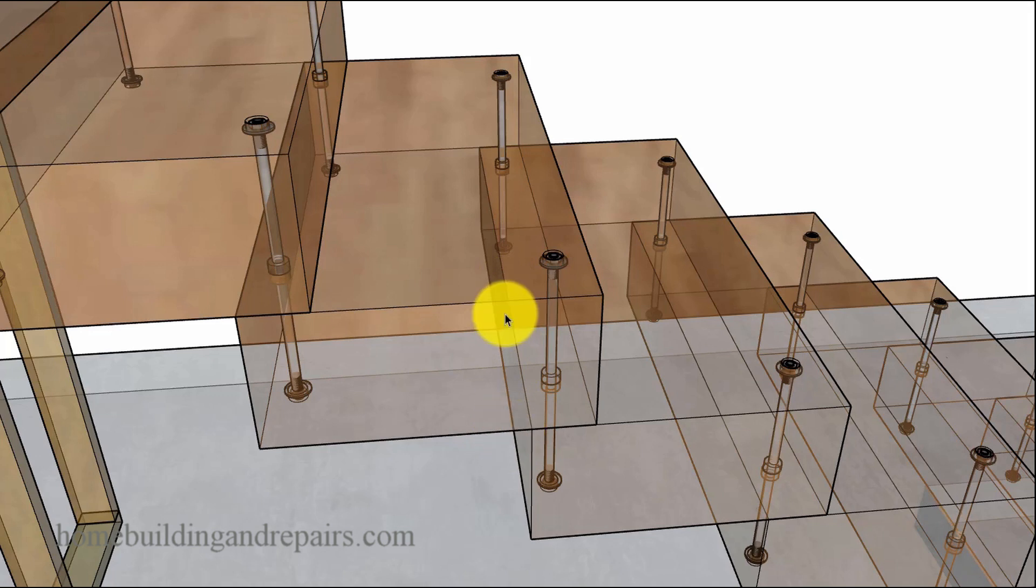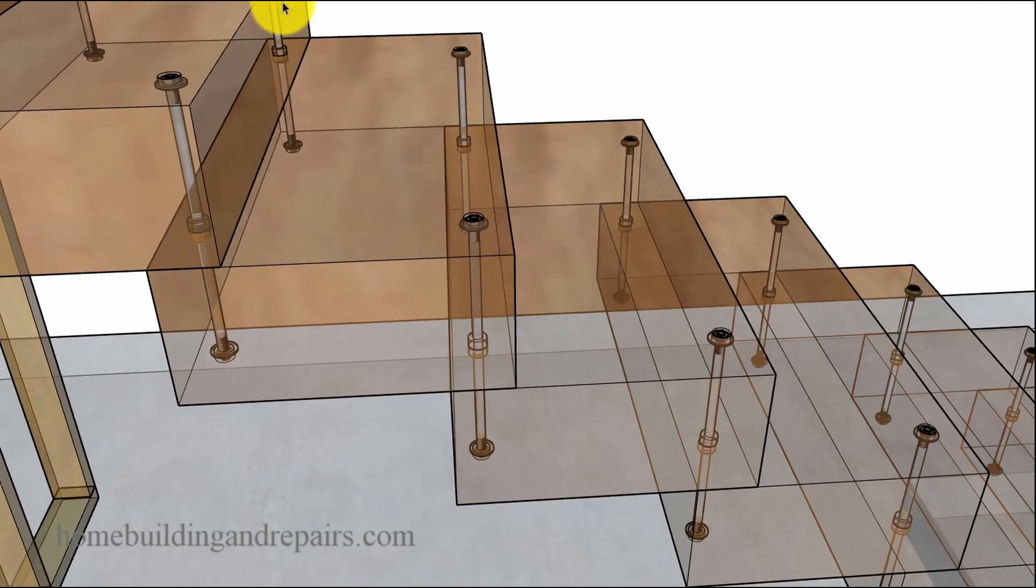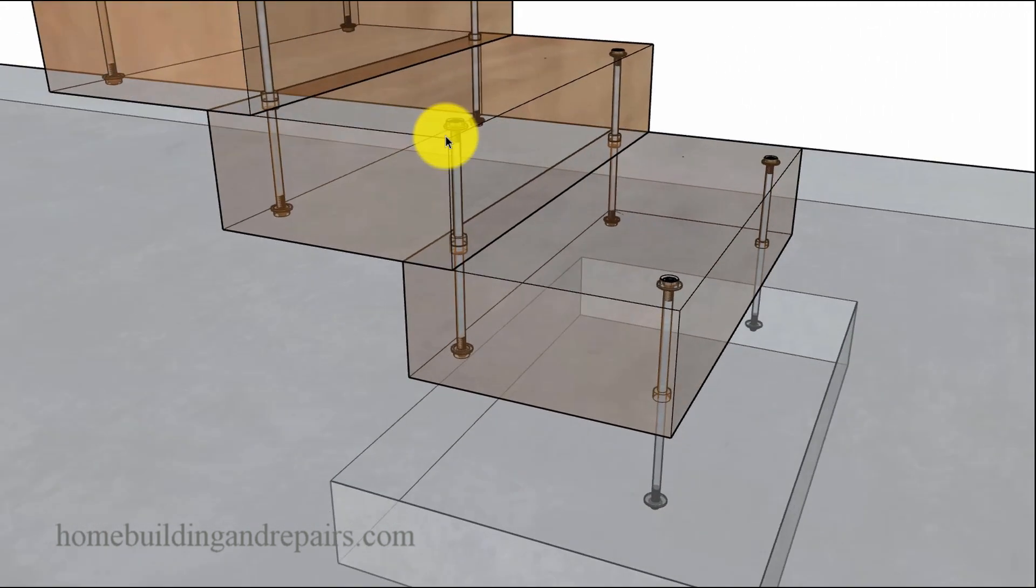7 1⁄2 inches is pushing it for the riser height. And that might not even be something that would be approved on a public stairway. I think a public stairway is 7 inches. Private is 7 3⁄4. Keep that in mind. I do have other videos on that.